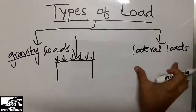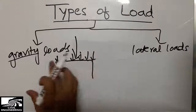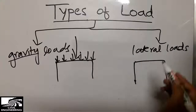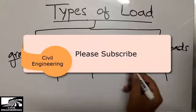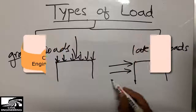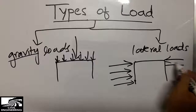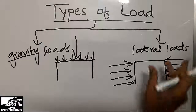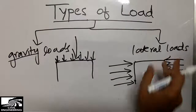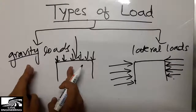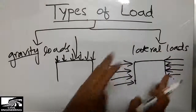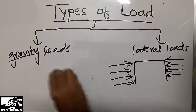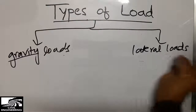Lateral loads are totally different from gravity loads. Taking the example of a frame structure, lateral loads are the loads that are acting on the structure in the horizontal direction. So one is the vertical loads — gravity loads — and one is the horizontal loads — lateral loads. Now we will further classify both the gravity loads and the lateral loads.